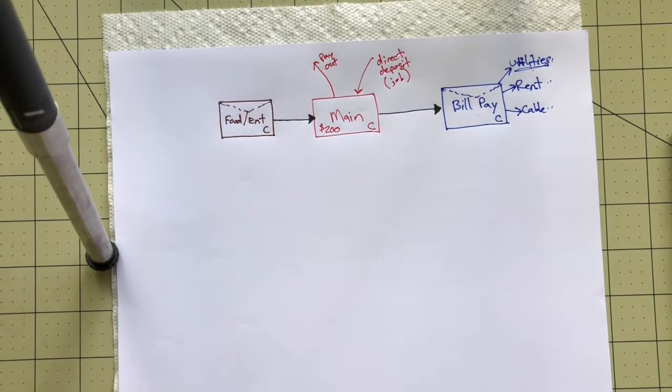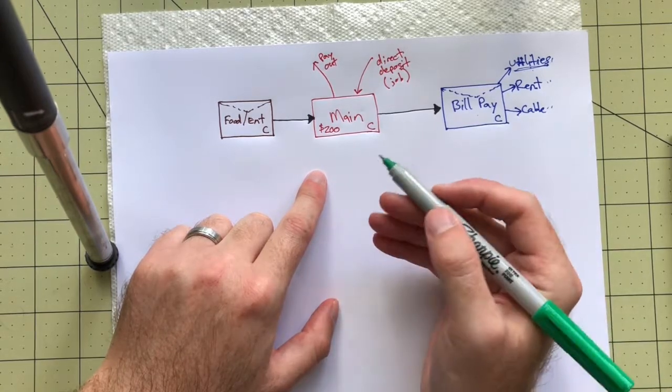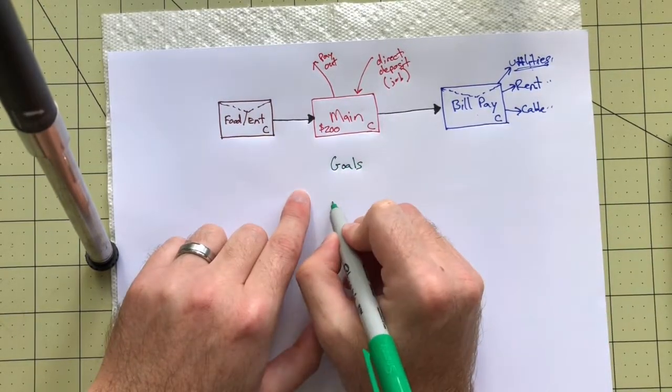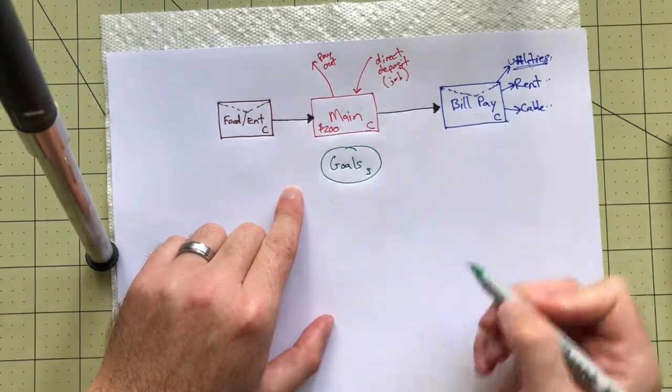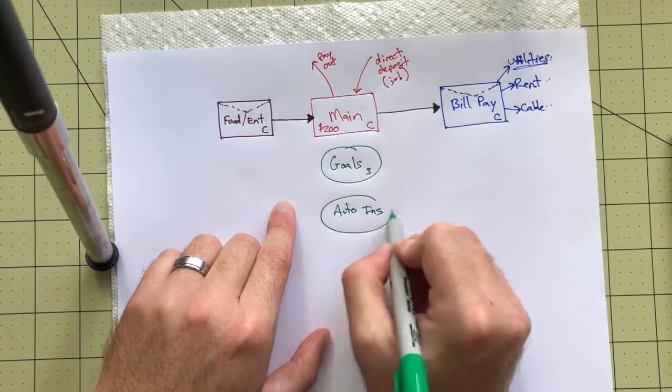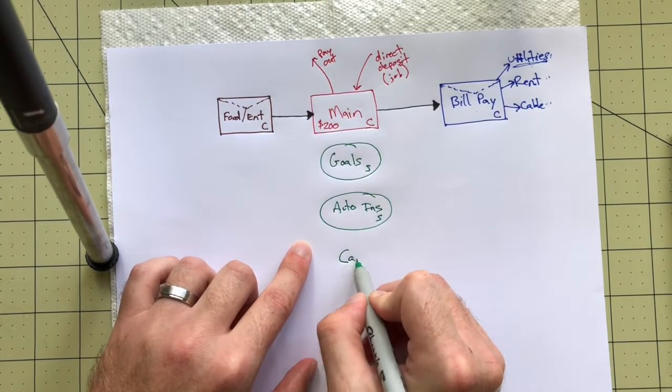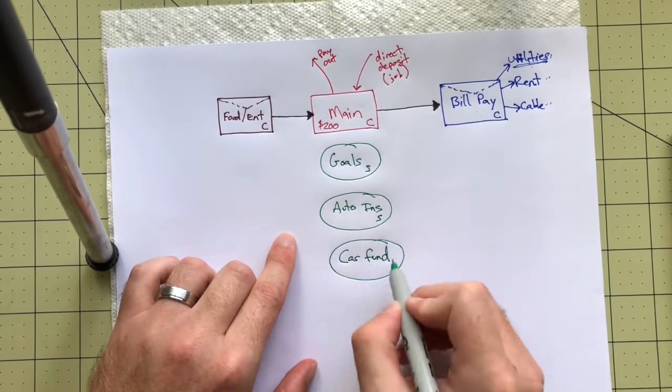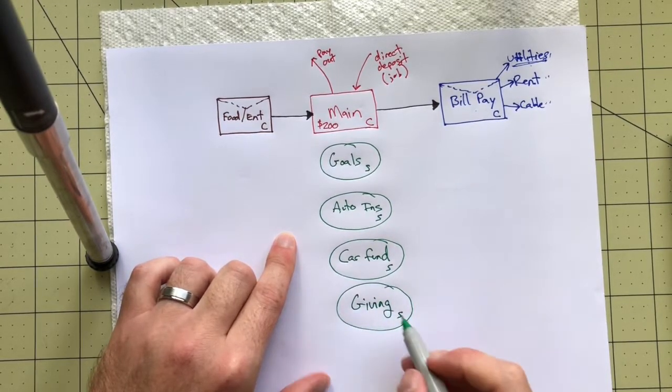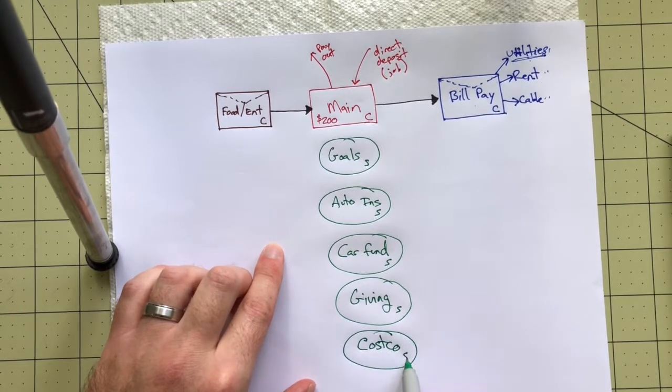Now sinking funds. So sinking funds, the first one will say, I'm not going to go through all of them, but these are just some of mine. We'll do the first one will be goals, any goals that we have. Another one would be, let's see, and that is a savings account. Then we'll do auto insurance. That's another sinking fund, that's a savings account. Let's do, what's another one? We have a car fund actually, that's a big one. Got a maintenance repairs and stuff like that. I'll skip a few. Let's go giving, that's another one that we have. And then finally, let's go down here and say, let's just go ahead and say Costco. And these are all savings accounts.